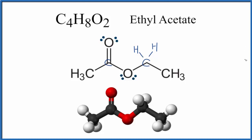At this point we have one, two, three, four carbons; three plus two is five, plus three is eight hydrogens; and one, two oxygens — and if you count the valence electrons up they're accurate as well. This is our Lewis structure for ethyl acetate. That's it — this is Dr. B with the Lewis structure for C4H8O2, ethyl acetate. Thanks for watching.